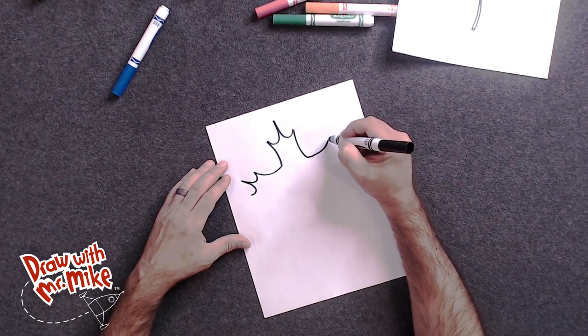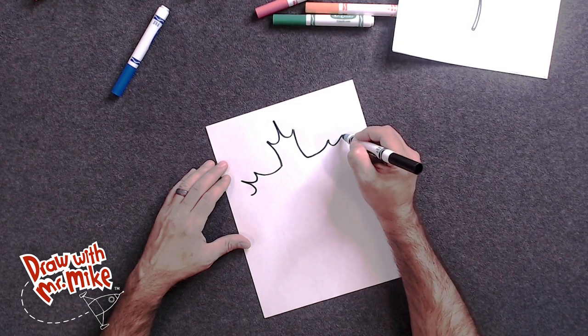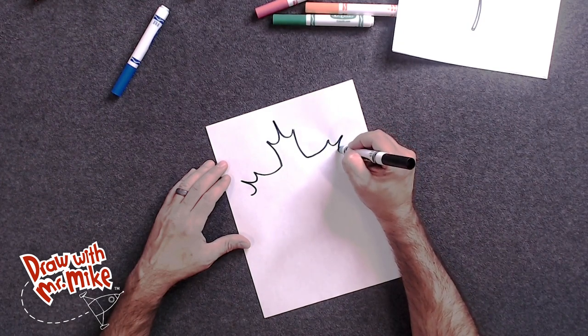And we'll do the same thing on this side. The regular J goes here. And then the opposite J goes here.